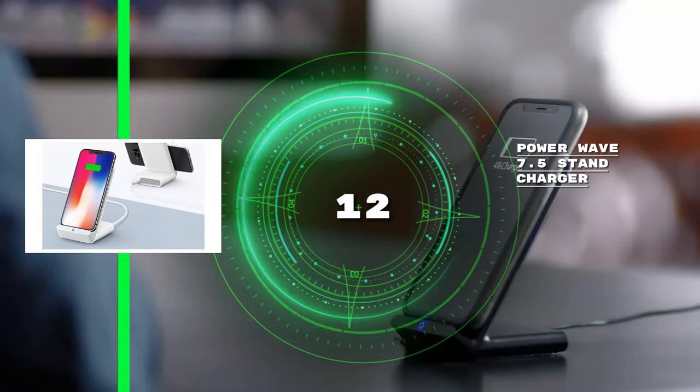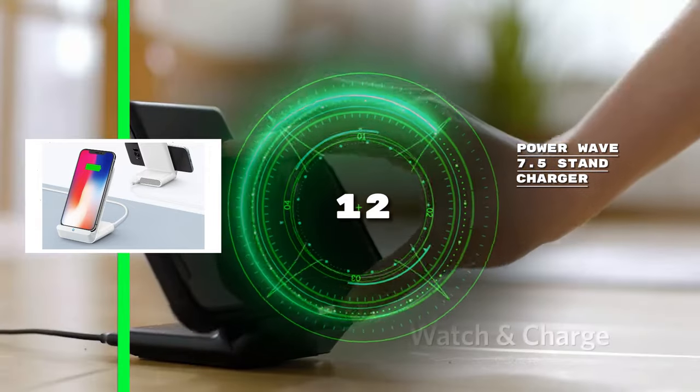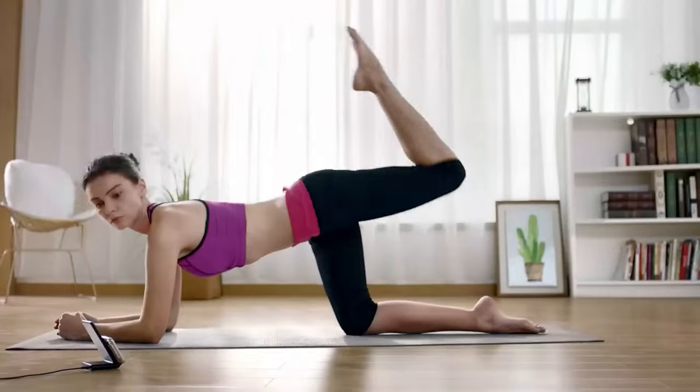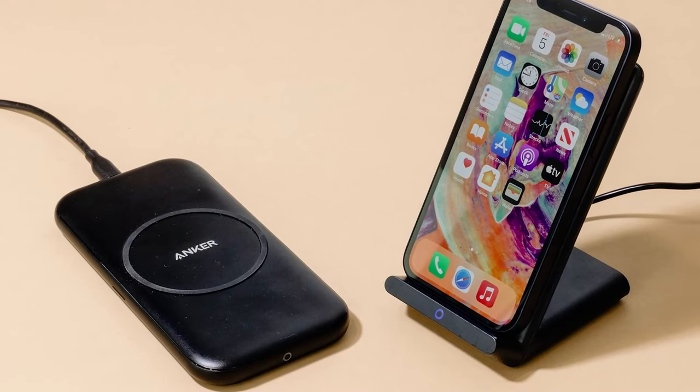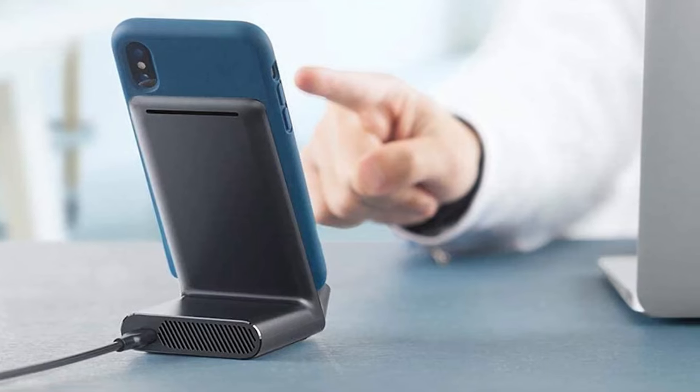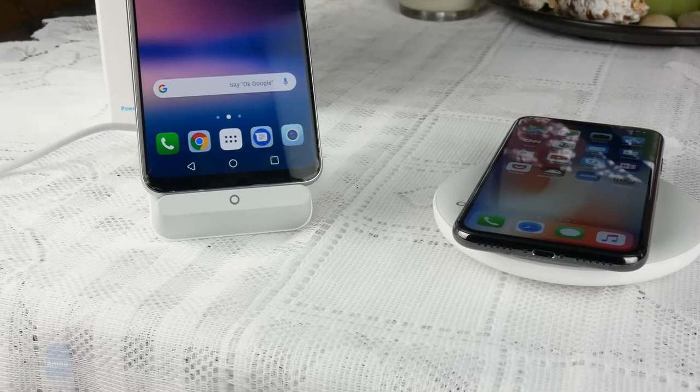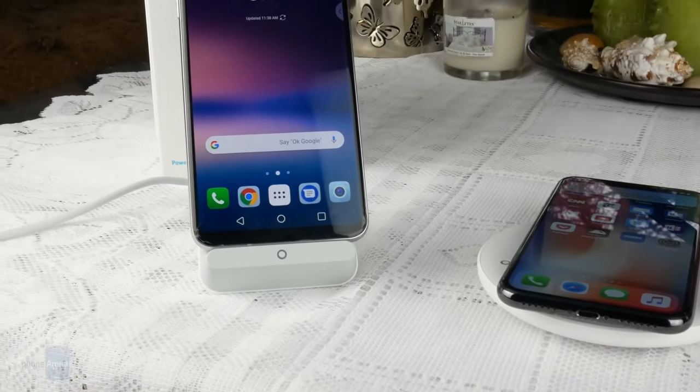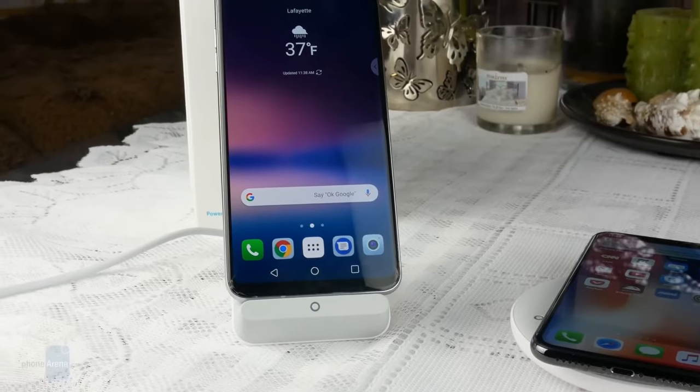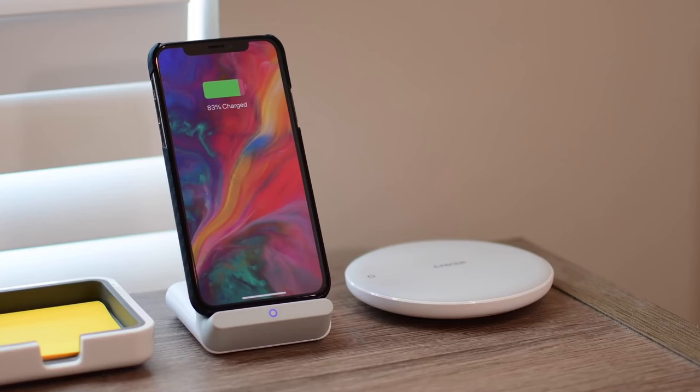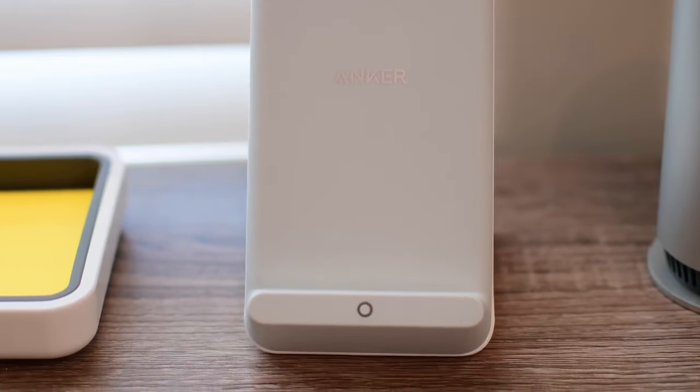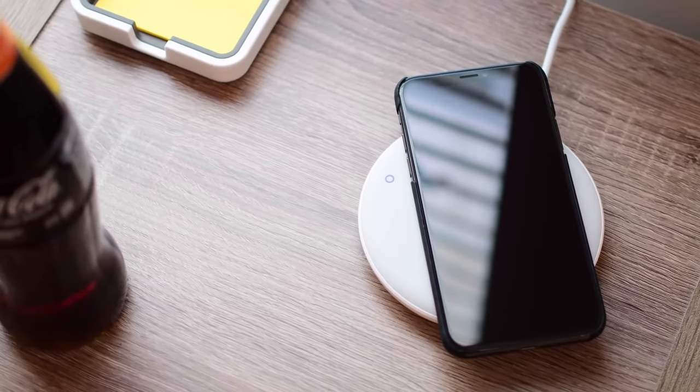See the PowerWave 7.5 stand charger. When it's time to charge a cell phone fast without removing the case, just slip it on the Anker PowerWave 7.5 stand in both portrait and landscape mode. You can keep watching Netflix at the same time as you charge. It works with the latest Apple and Samsung phones, as well as other phones that support wireless charging. This is a terrific present for someone who desires a stylish charging solution without unsightly wires.